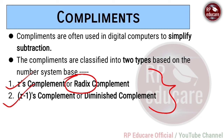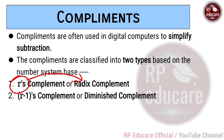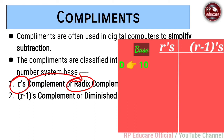Here r denotes the radix, meaning the base. If we talk about decimal numbers, the base is 10, so r = 10. Therefore, decimal r's complement is 10's complement, and decimal r-1's complement is 9's complement. Similarly, in binary, r's complement is 2's complement because binary base is 2, and r-1's complement is 1's complement.